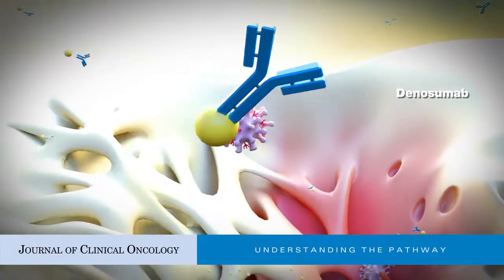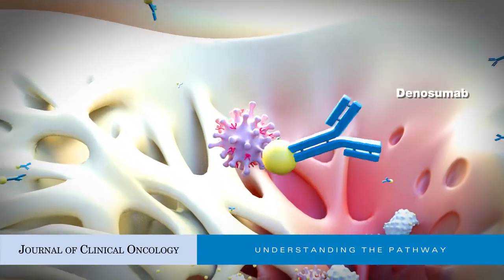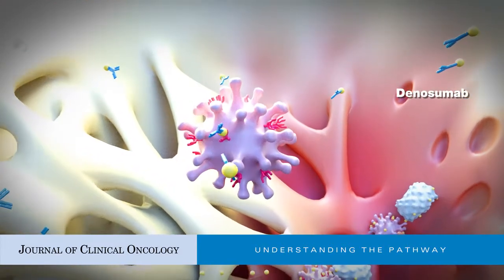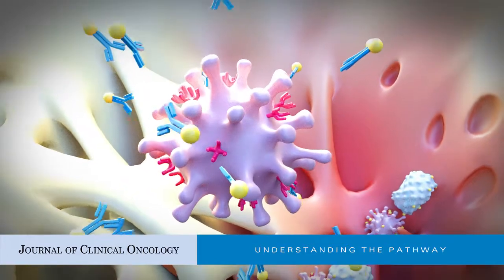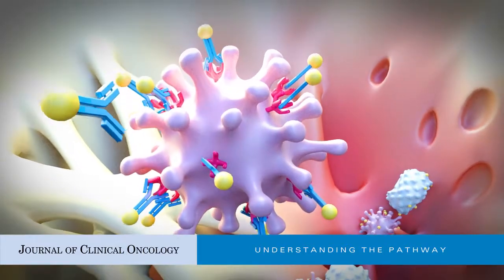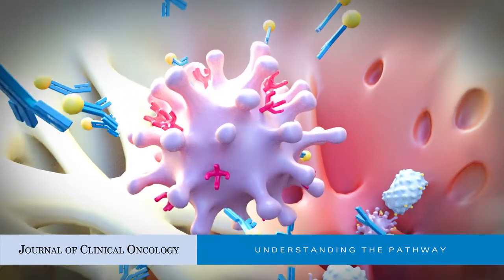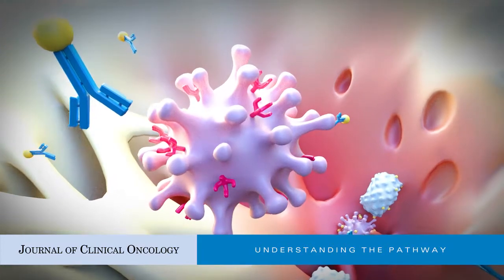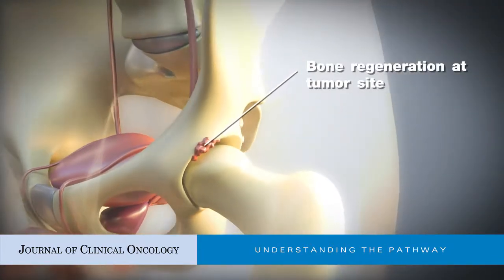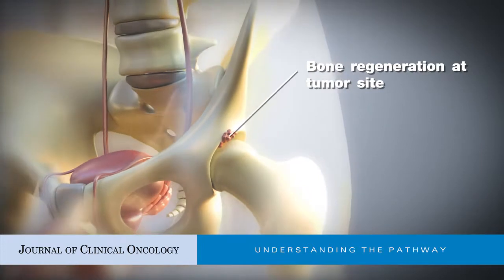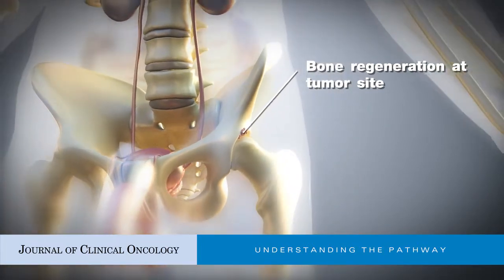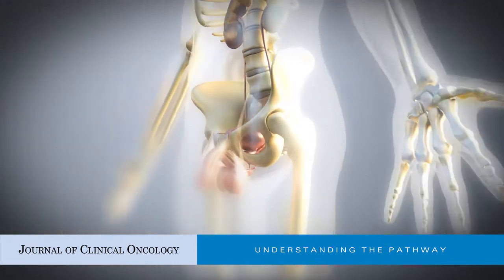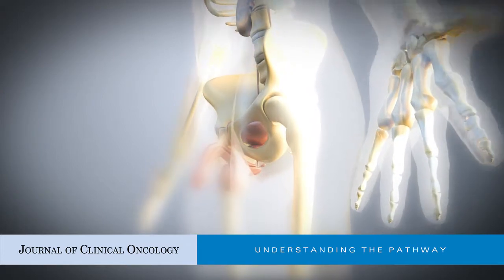Osteoclast inhibition has emerged as a major bone-protective strategy. Denosumab is a humanized antibody that blocks RANKL binding to its receptor on osteoclasts, inhibiting osteoclast maturation and reducing bone resorption. Preclinical models demonstrated that denosumab improved bone density and volume by reducing resorption compared to bisphosphonates. Denosumab was also found to be superior in lengthening time to skeletal-related events and suppressing bone turnover.